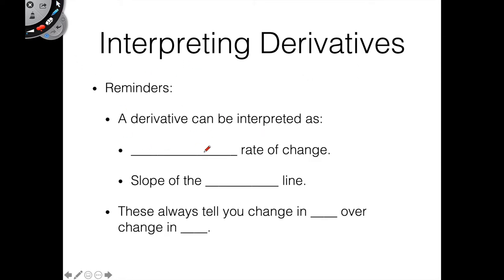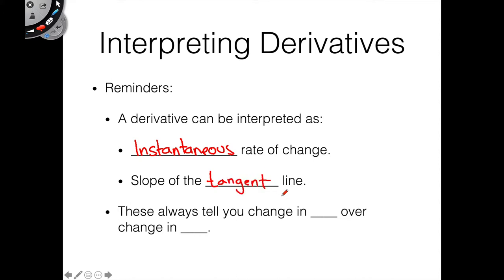Let's go through some reminders. We know that the derivative can be interpreted in two key ways. We can interpret it as an instantaneous rate of change. We can also interpret it as the slope of the tangent line. Those are just two ways we can interpret the derivative. You can also use the limit definition form, but we're not worried about that here.